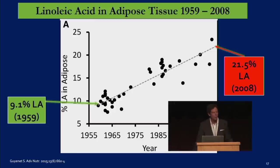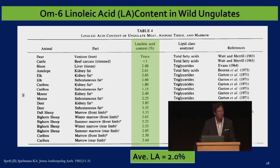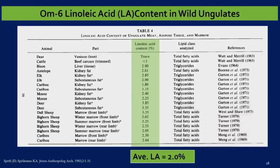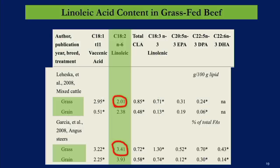The 9.1% in 1959 was already far too high. I think this number should be more like 4%, but we don't have good data to confirm that. When we consume linoleic acid, we tend to accumulate it — we just can't burn all of it for fuel.